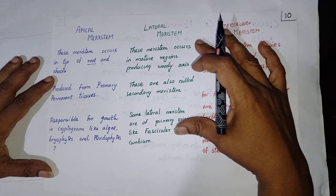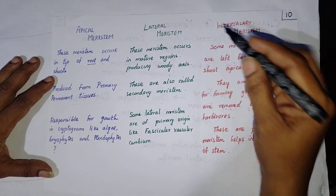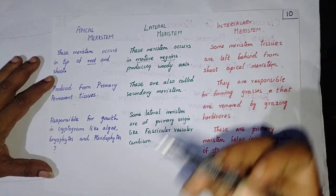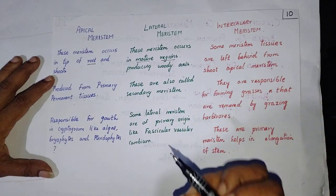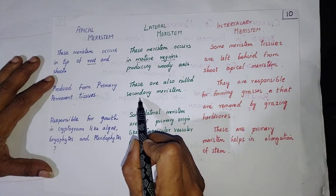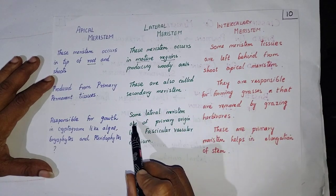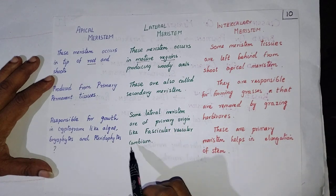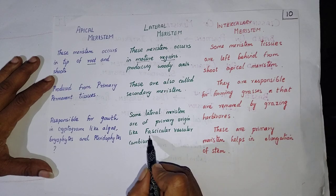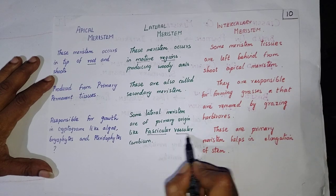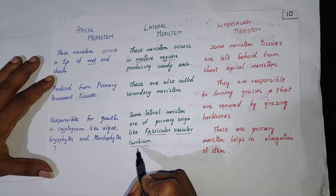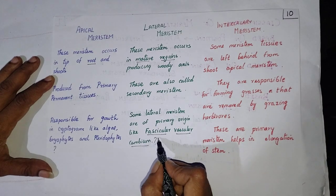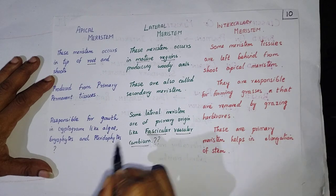Moving on to the lateral meristems — these meristems occur in the mature region. They are not found in the growing region but in the region where it has matured, and they produce the woody axis. They are also called secondary meristems, and some lateral meristems are of primary origin, like the fascicular vascular cambium, which is quite tricky and will be covered in detail in future classes.